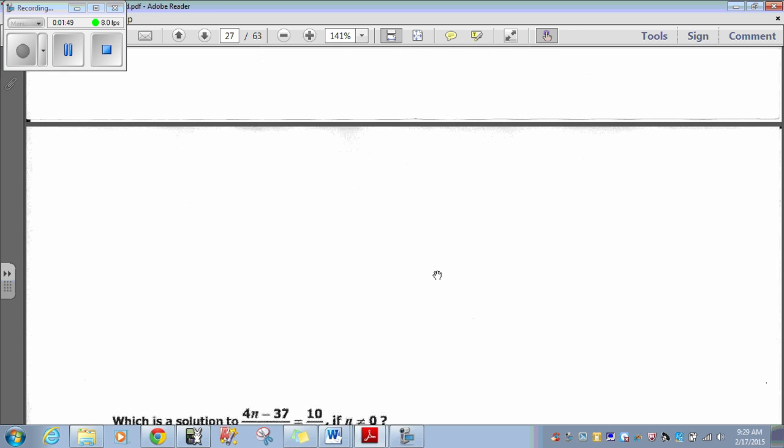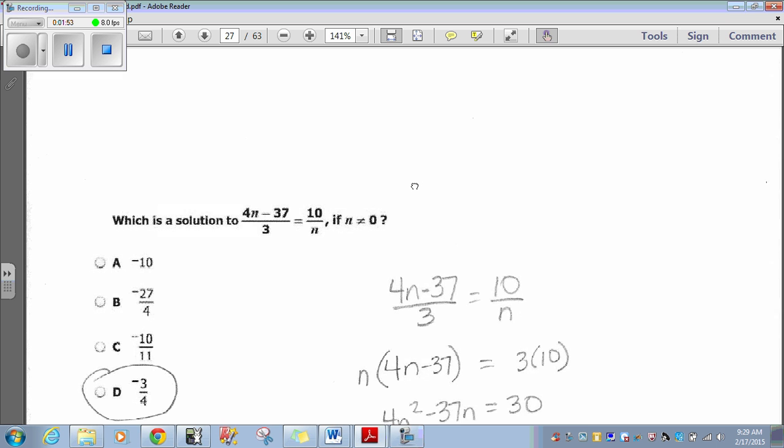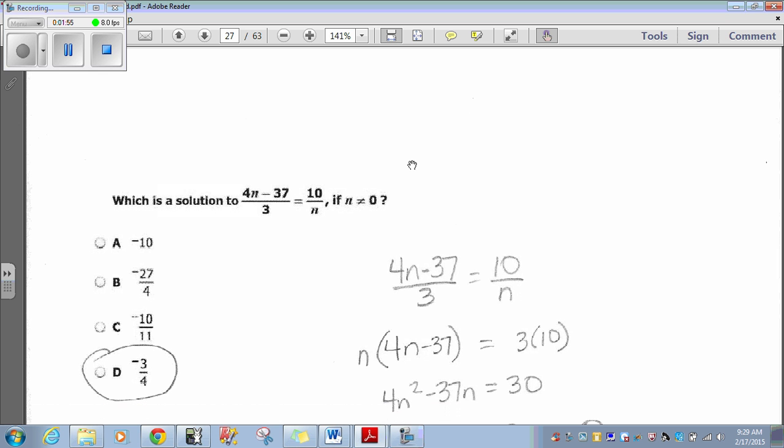Which is a solution to 4N minus 37 over 3 equals 10 over N if N is not equal to 0. Again, that just means, you know, there's no negative integers there. So, you know, no 0. It's just regular numbers that you're dealing with. That's all that means.